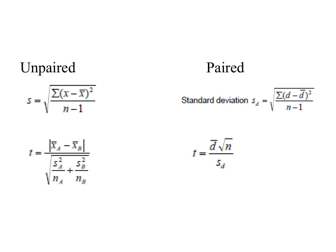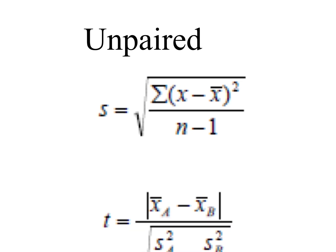In each case, whether paired or unpaired, you need to calculate standard deviation and then use it to calculate the t-value. For the unpaired formula: x is a data point collected; x-bar means the mean of the data for that set; n is the number of repeats; and the epsilon symbol means 'the sum of'. For each data point, subtract it from the mean, square it, do that for all repeats, add them all up, divide by n minus 1, and then square root the whole thing. That gives you the standard deviation.